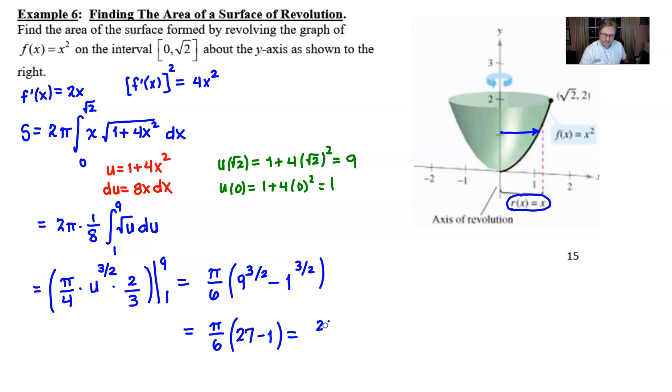And then of course 1 to the three-halves is 1. And so you can eventually call this 26/6 π or 13/3 times π or 13π/3 if you want to put the π in the numerator. Either way is fine. So you see, in order to get these clean answers from this type of integration technique, we almost invariably have to have a square root as a boundary to make that happen.